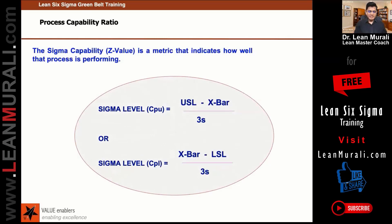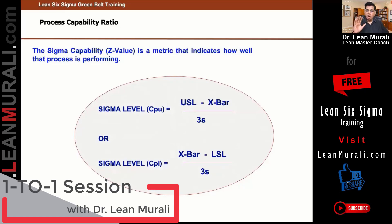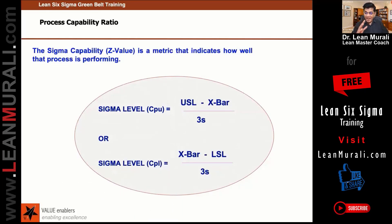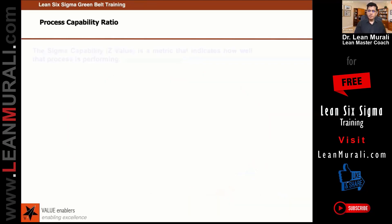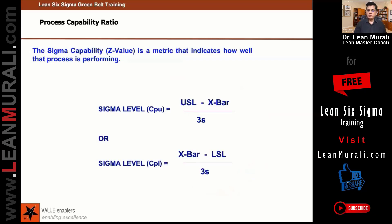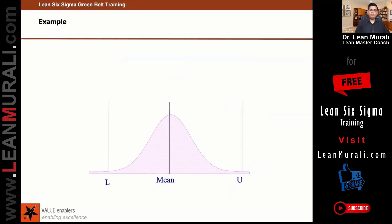Now I'm going to give you some examples and Excel sheets. How many of you noted this formula? It's very simple. If I tell you the specification limit — USL and LSL — and give you the average (x-bar) and the standard deviation, you can calculate CPU, CP, and sigma level. Sigma level is nothing but the specification limit and its deviation from the average, divided by the standard deviation — and this is nothing but three standard deviations.